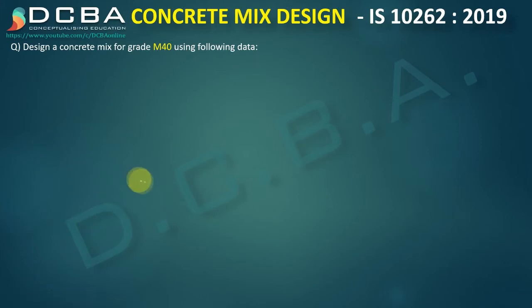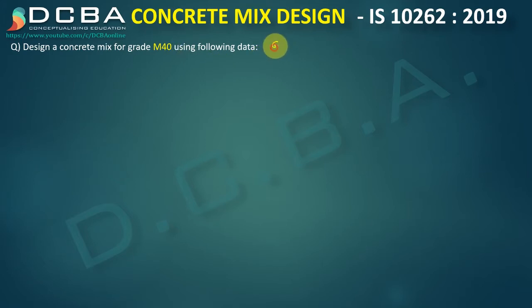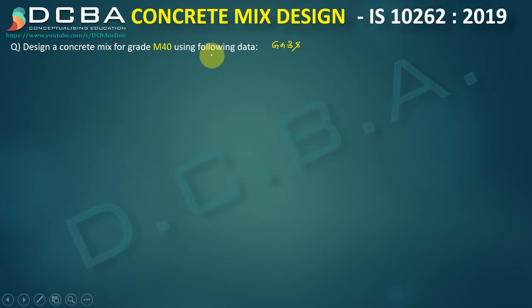In this video lecture we will be designing a mix grade for M40, but this time we'll be using a cementitious filler of GGBS — ground granulated blast furnace slag. Let us see what changes we have to make. In the previous mix design we had used fly ash, so this design will be on similar principles, just a little bit different.